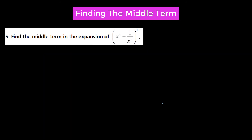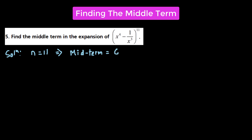Here we have the binomial expression (x⁴ − 1/x³) raised to the power of 11, and we have to find out the middle terms. We have n = 11, which is an odd number. Using the formula: 11 + 1 = 12, and 12/2 = 6. So the 6th term and the 7th term are the middle terms.